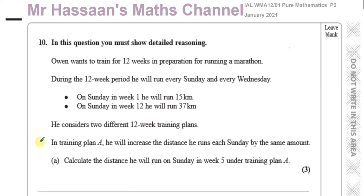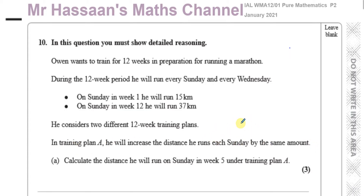In training plan A, he will increase the distance he runs each Sunday by the same amount. So this sounds like an arithmetic series — he's going to increase it by the same amount, which is like a common difference. Every time he has to add the same amount, every week. Calculate the distance he will run on Sunday in week 5 under training plan A.